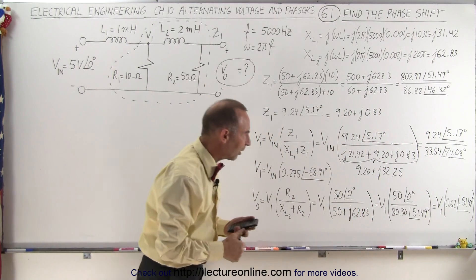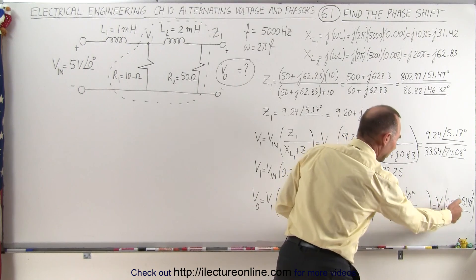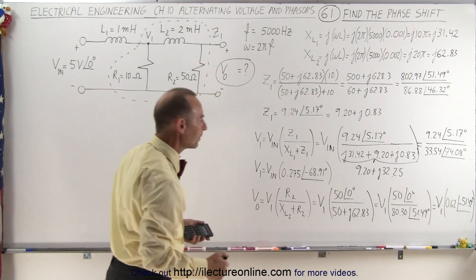Because that becomes the negative of this angle, and 50 divided by 80 is about 0.62.